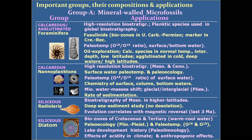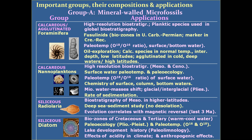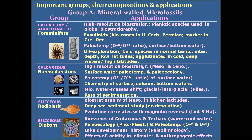The first and foremost mineral-walled group is calcareous and agglutinated foraminifera, useful in high-resolution biostratigraphy. Their planktonic species are used in global biostratigraphy and correlation. Fusulinids, which are larger foraminifera, are used in biozonation of Upper Carboniferous to Permian rocks and are also good markers in Cretaceous to recent times. Paleo-temperature can be worked out on the basis of oxygen isotopes, along with surface and bottom water conditions. In oil exploration, foraminifera are very useful; calcareous species show normal temperature, intermediate depth, and low latitudes, while agglutinated species show cold, deep waters and high latitudes.